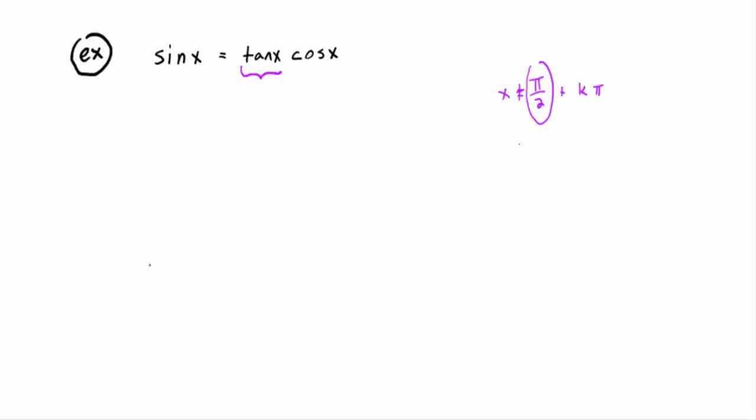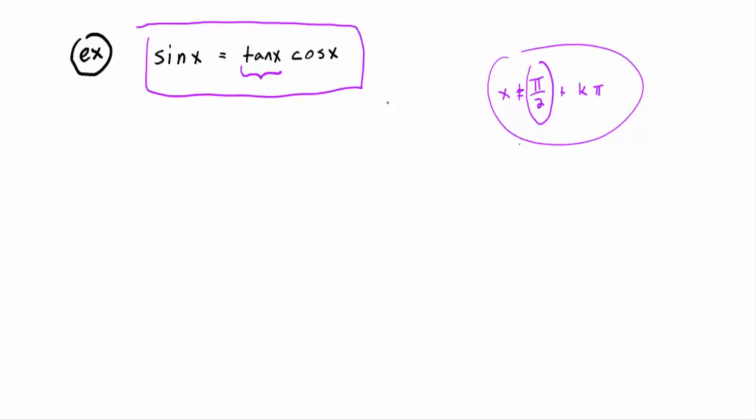What I'm saying is: sine of x equals tangent of x times cosine of x is a true statement, except at those values — which a lot of teachers gloss over, but it's important to know when it won't be true. Now, how would you prove something like this? What you don't do is treat it like an equation. It's bad form, and that method won't work on harder identities.